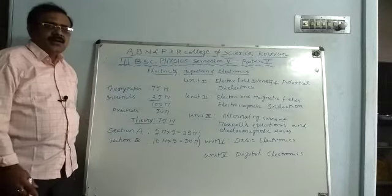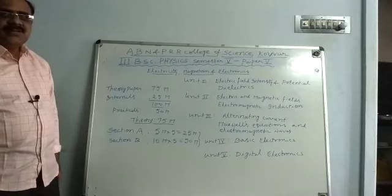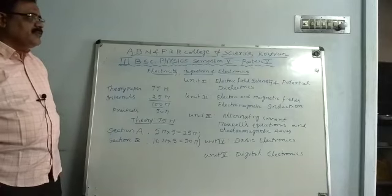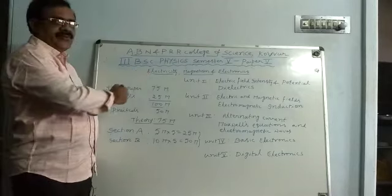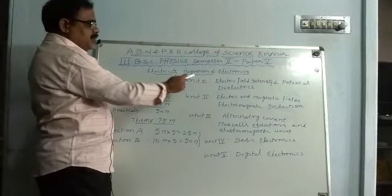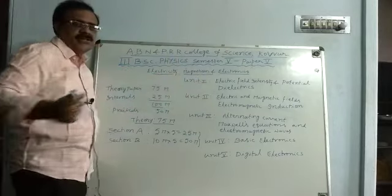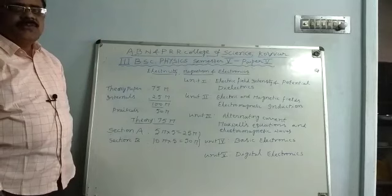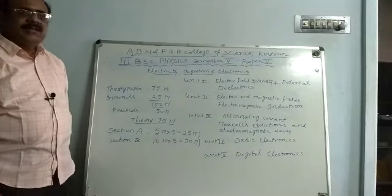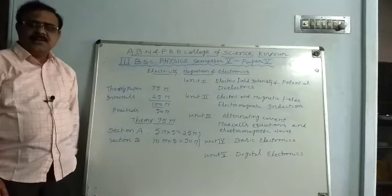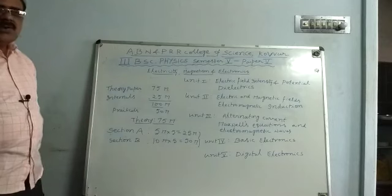I want to give you the syllabus of the final year, Semester 5, Final B.S.E. Physics, Paper 5. The title of the paper is Electricity, Magnetism and Electronics. Today, I would like to give you the syllabus and the exam pattern. So, let us discuss about our syllabus.